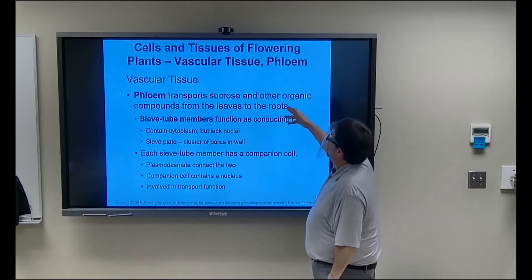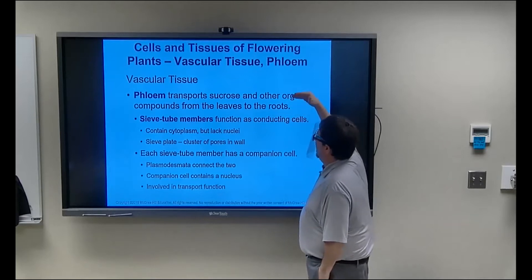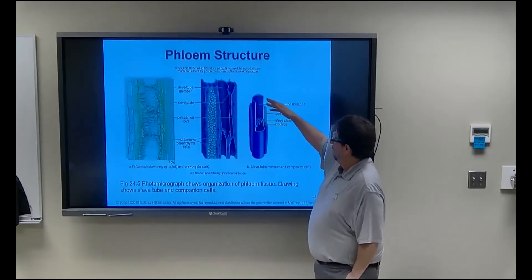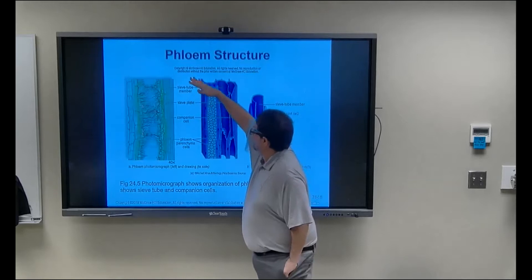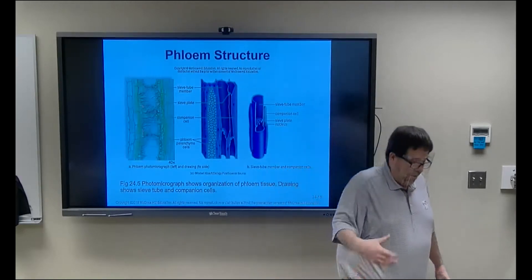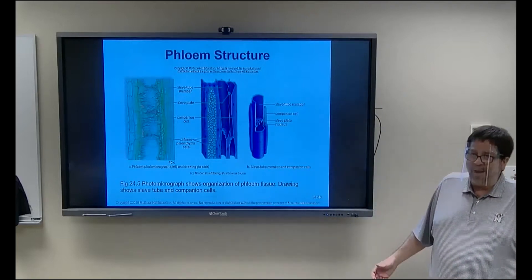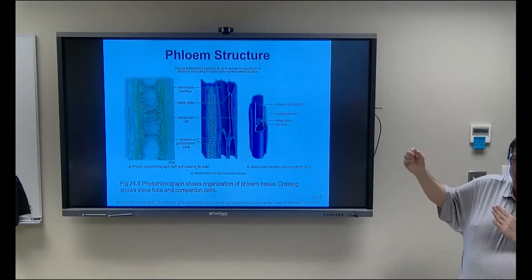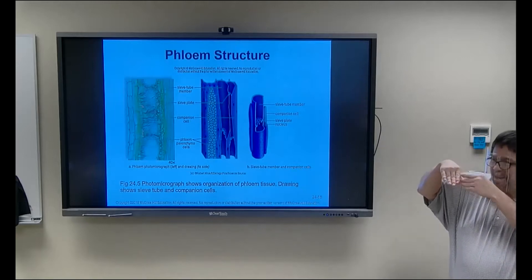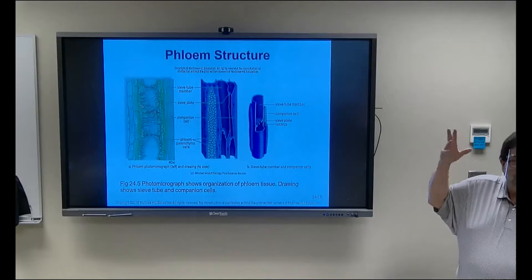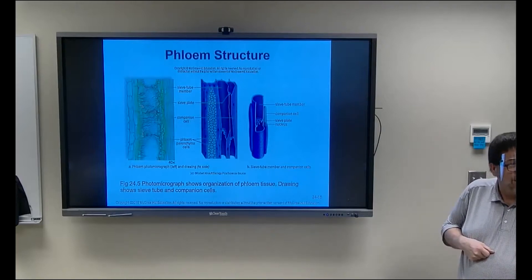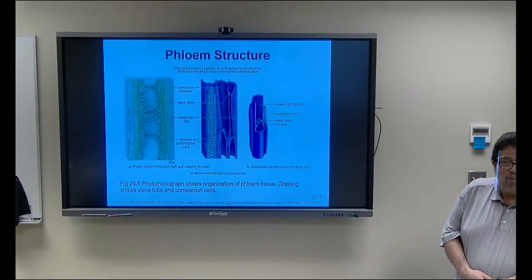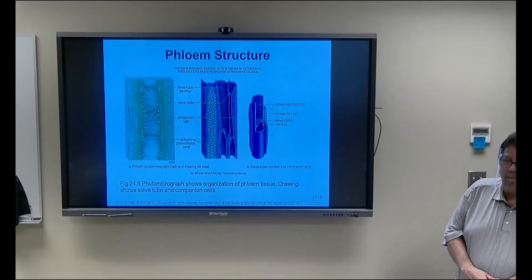Phloem is the tube that carries the products of photosynthesis down the plant. Sieve tube cells are the main component. The leaves do photosynthesis, and the plant actively transports sugar into the phloem tube; water comes in by osmosis and loads it all the way down the plant. A good analogy: take a hose, pour sugar in the tube, hook it up to a water supply, and blow sugar water out the other end — that's essentially how phloem works.